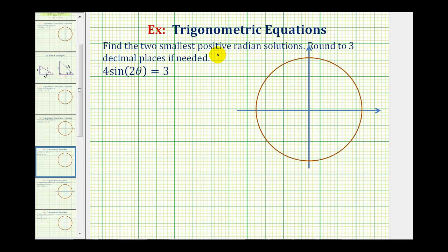We want to find the two smallest positive radian solutions to the trig equation four sine two theta equals three. We might be thinking that we have to perform a substitution for sine two theta, but we're not going to.